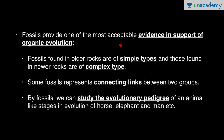Fossils provide one of the most acceptable evidences in support of organic evolution. Fossils found in older rocks are of simple types, while those found in newer rocks are of complex types, reflecting that organisms become more and more complex as they evolve. Some fossils represent connecting links between two groups, like Archaeopteryx, which is a connecting link between Reptilia and Aves. By studying fossils we can trace the evolutionary pedigree of animals like the horse, elephant, and man.